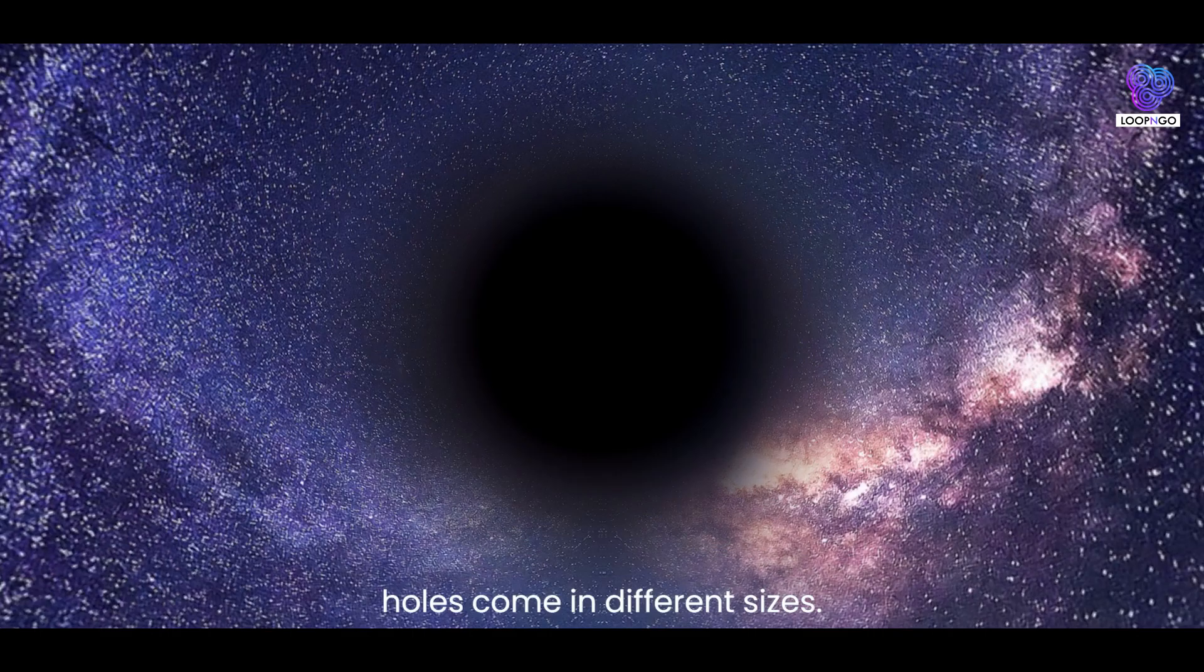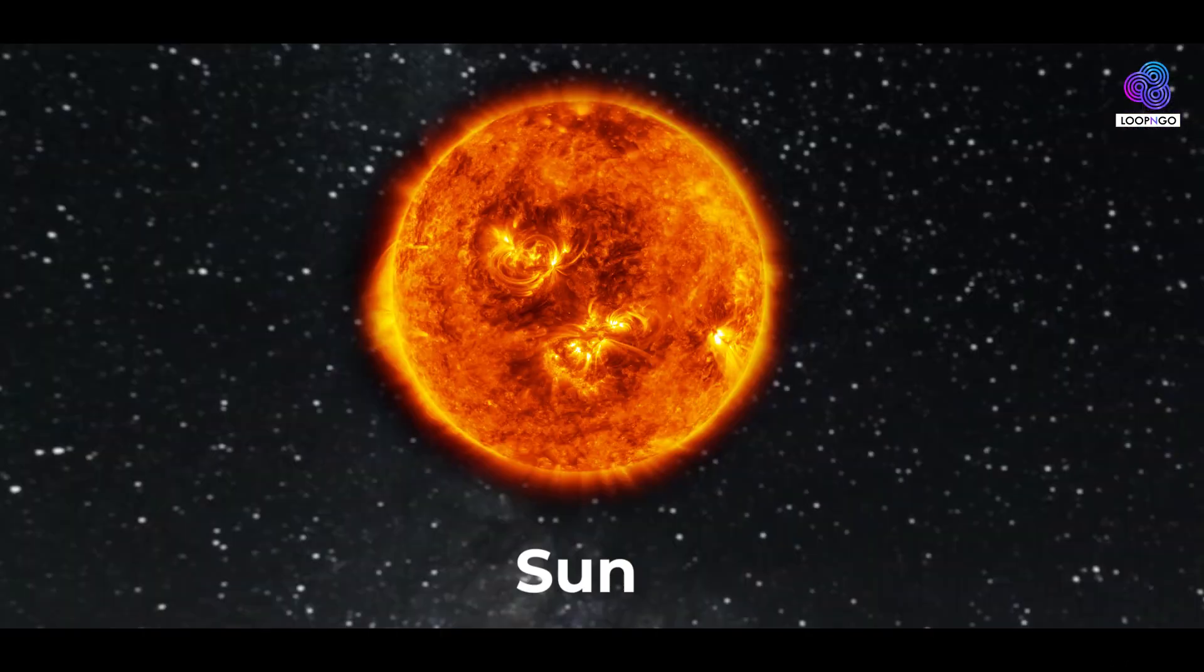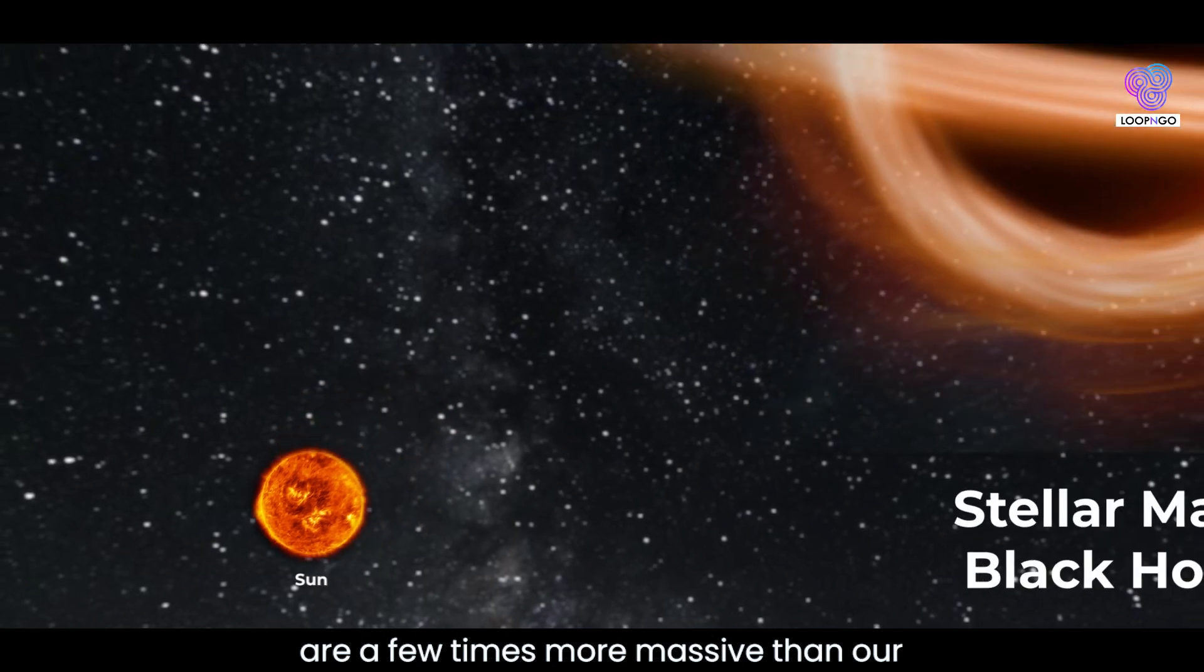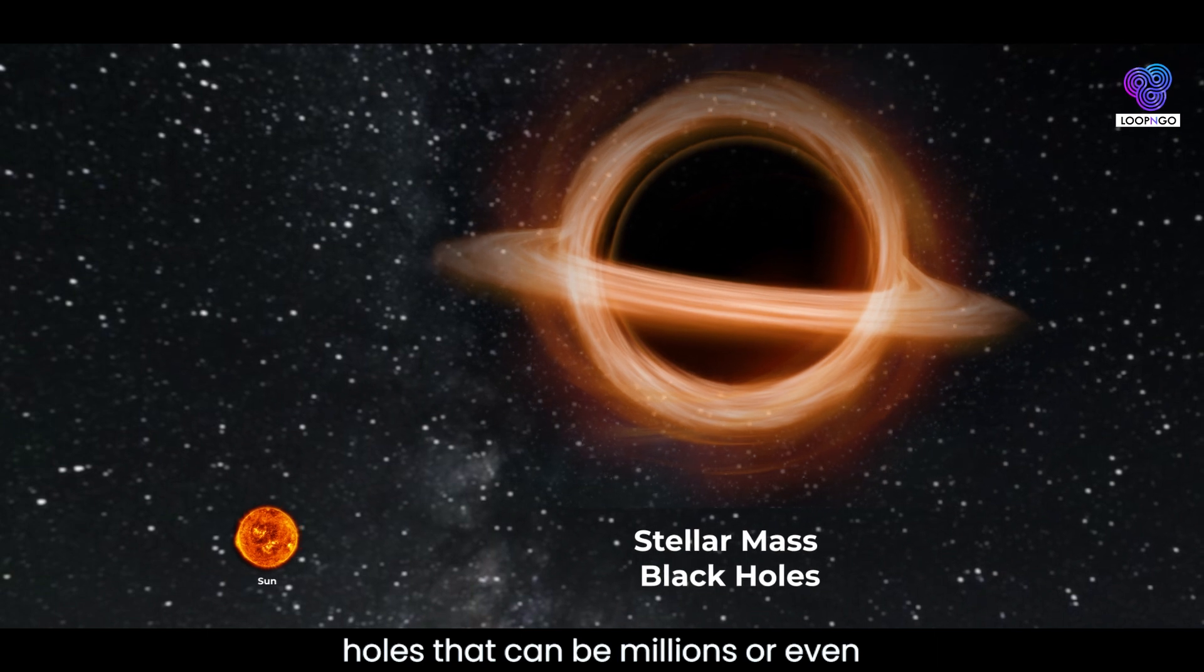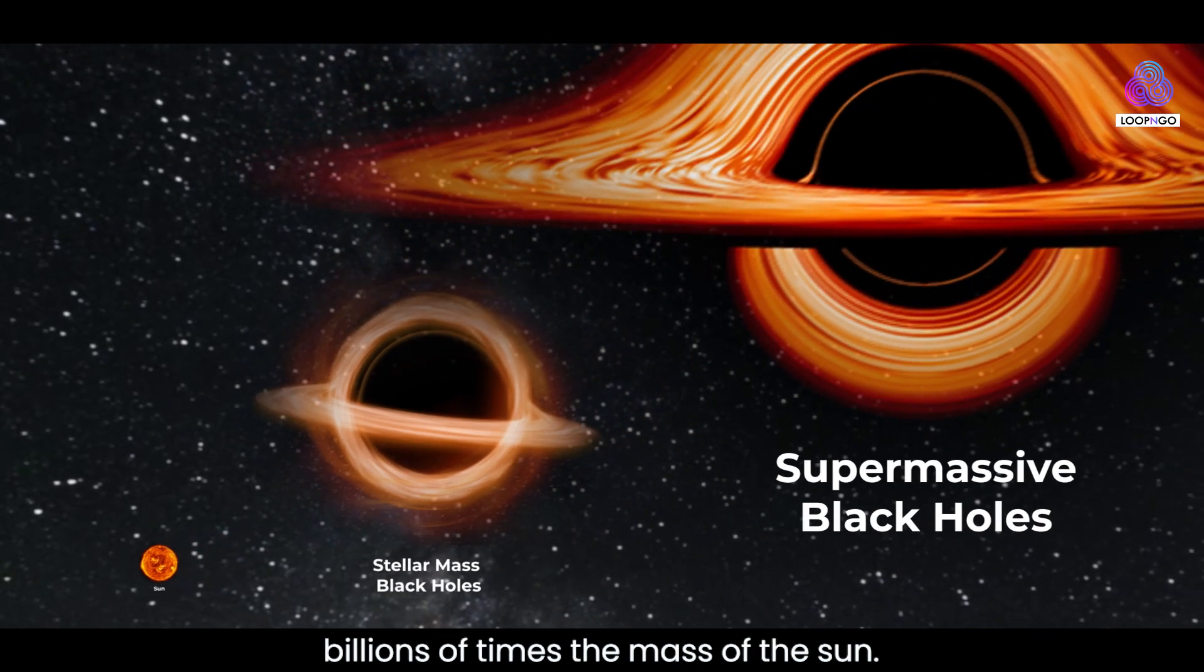Black holes come in different sizes. We have stellar mass black holes, which are a few times more massive than our sun, and supermassive black holes that can be millions or even billions of times the mass of the sun.